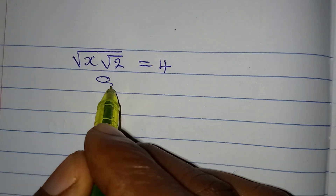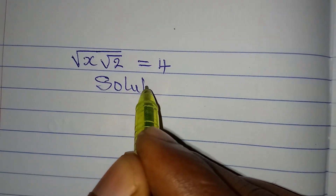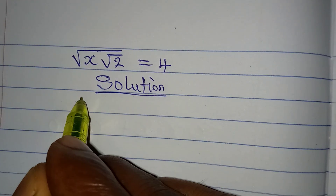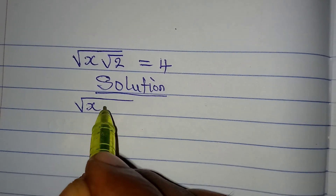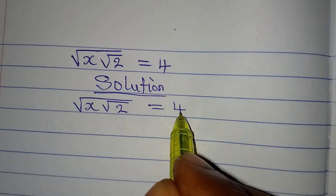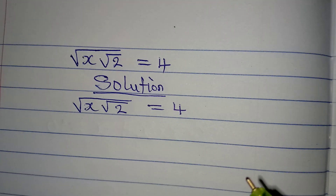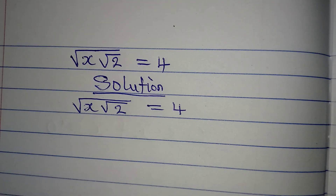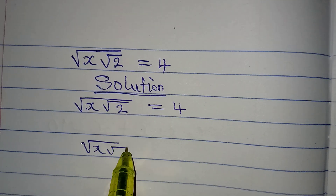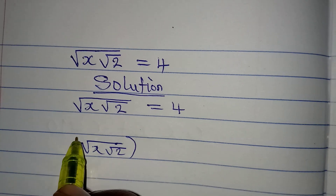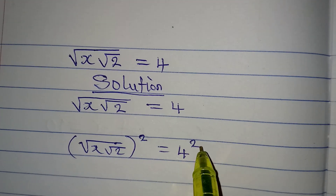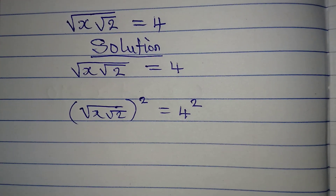Let's solve this problem very quickly. We have the square root of x times the square root of 2, equal to 4. The first thing is to square both sides, so we have the square root of x square root of 2, both squared, and then 4 will be squared. Remember, if you do the same thing on both sides, it will not change an equation.